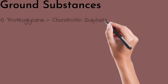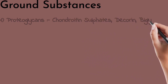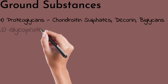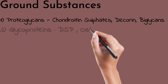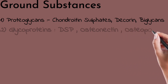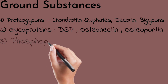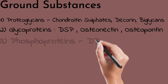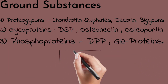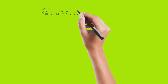The ground substances have three subtypes: proteoglycans — for example, chondroitin sulfates, decorin, and biglycans; glycoproteins — these are DSP (dentine sialoprotein), osteonectin, and osteopontin; and phosphoproteins — these are DPP (dentine phosphoprotein) and gla-proteins.